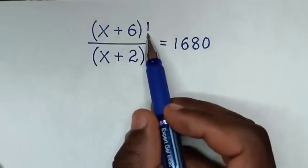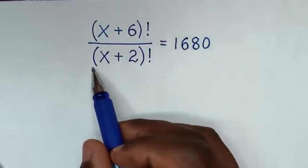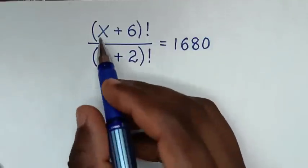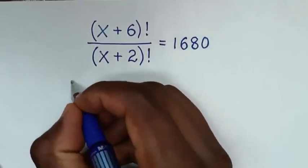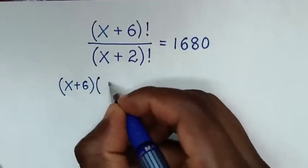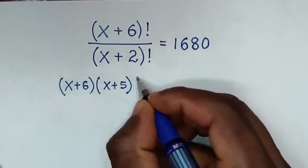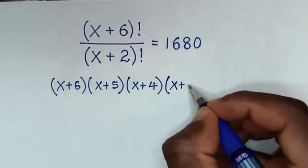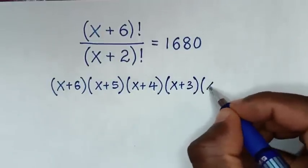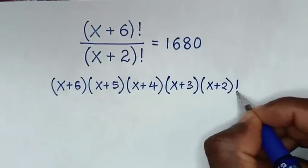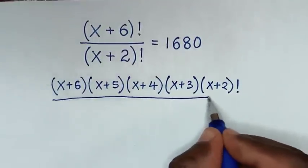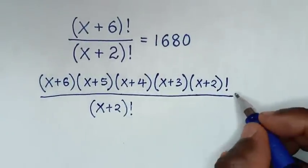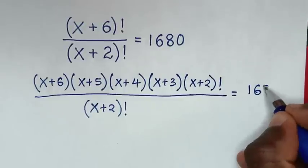From the numerator, (x+6)! can be expanded as (x+6)(x+5)(x+4)(x+3)(x+2)!, and then over the denominator (x+2)! this is equal to 1680.